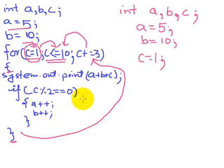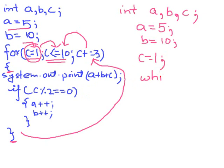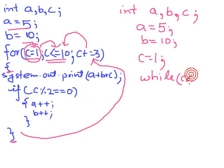Then the testing expression is to be put along with the while loop. So: while c is less than or equal to 10.